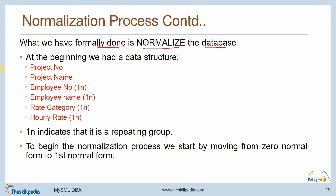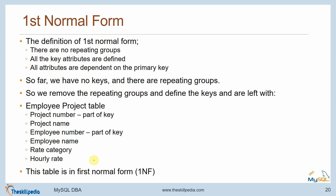What we have formally done is normalized our database. At the beginning, we had a data structure where project number and project name appeared alongside repeating groups of employee number, employee name, rate category, and hourly rate. We began the normalization process by moving from zero normal form to first normal form. The definition of first normal form is: there are no repeating groups, all key attributes are defined, and all attributes are dependent on a primary key. We removed the repeating groups, defined the key, and were left with an employee-project table where project number and employee number formed the composite key.